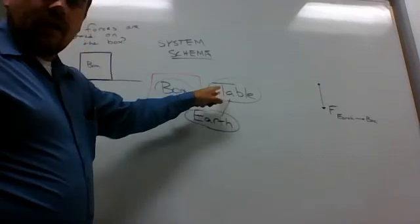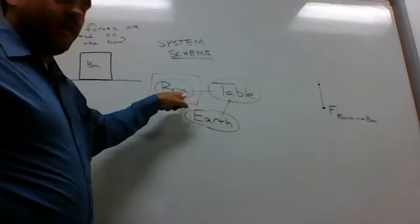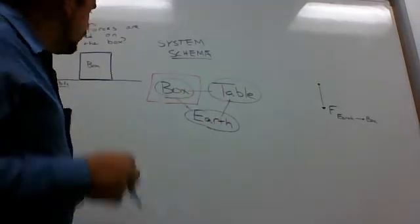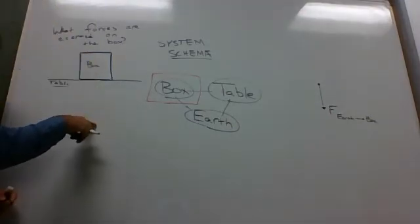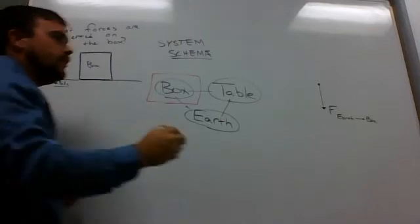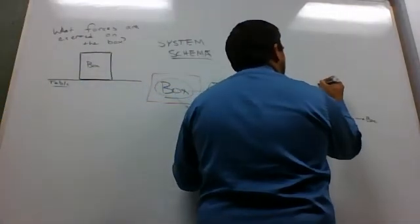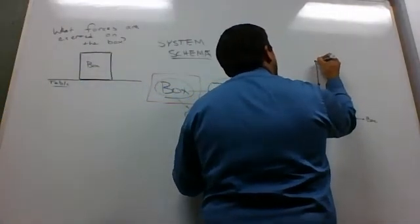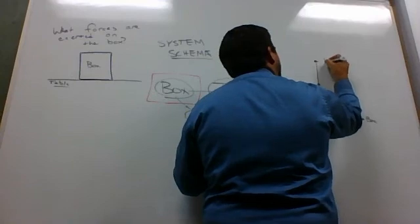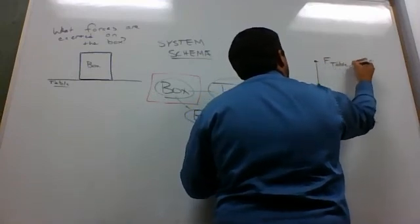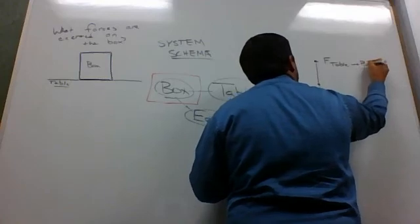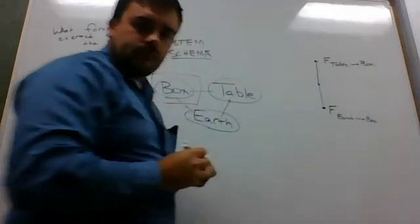I now know that there's a contact force between the table and the box. Well, what's the table doing? If I look here, I know that earth is pulling it down. So what's the table got to do? Well, it's got to be pushing it up. And so, the arrow goes up. And this is force of table on box.